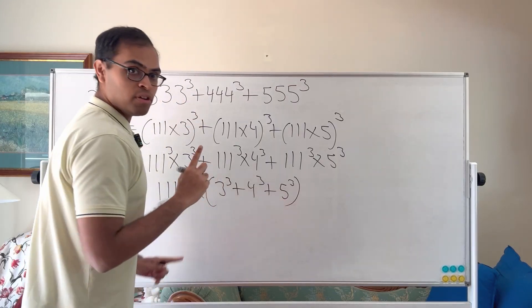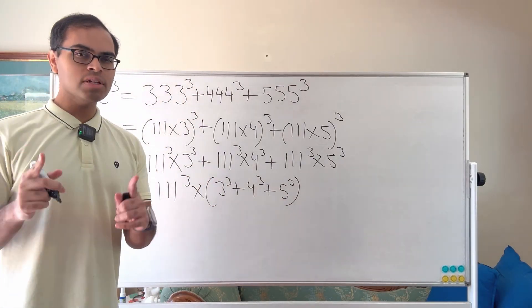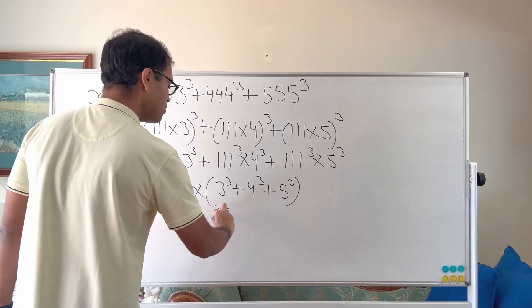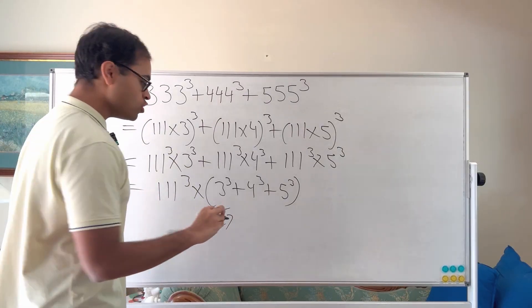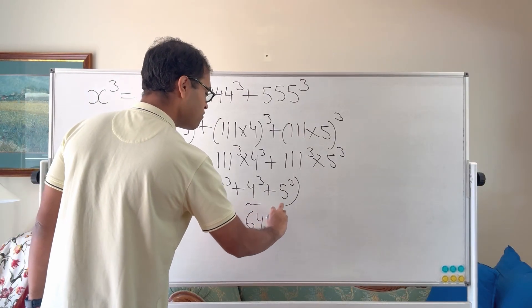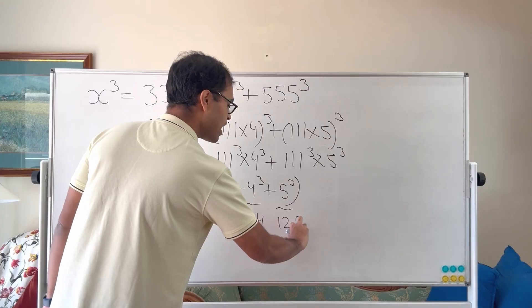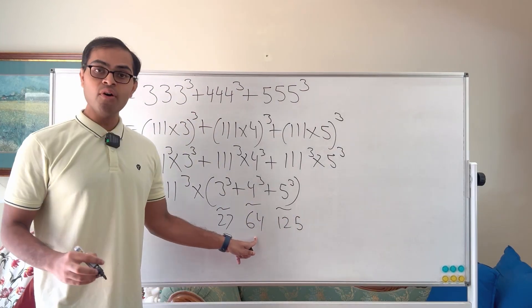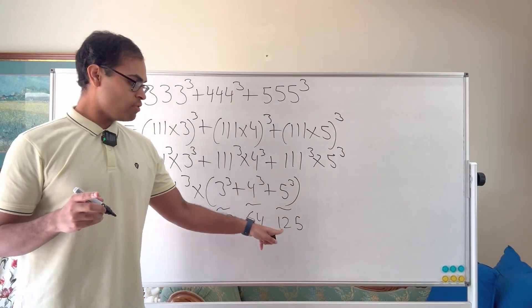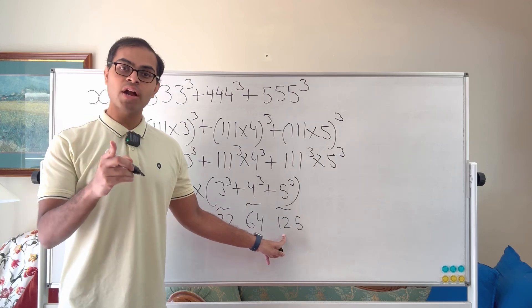And this is super beautiful because 3 cubed plus 4 cubed plus 5 cubed, what's that equal to? So 3 cubed is equal to 27, 4 cubed is equal to 64, and 5 cubed is equal to 125. 27 plus 64 is equal to 91. 91 plus 125 is equal to 216.